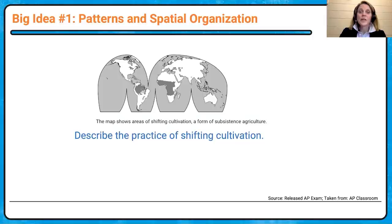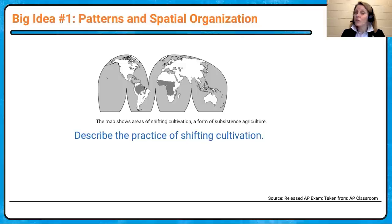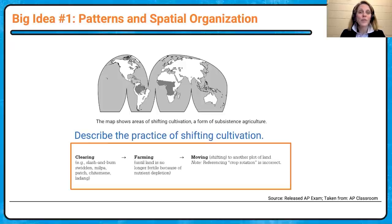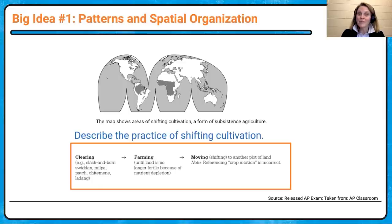Shifting cultivation is an example of subsistence agriculture. We have a map of where it's located — but what does shifting cultivation look like? What do we mean by shifting and cultivation? There are three big things we're looking for. First, we have to clear the land — a lot of times we talk about slash and burn. Then they're going to farm the land for a few years until it can no longer produce goods. When that happens, we move, we shift to another plot of land and start the process all over again. To receive points on an FRQ, you would need all three of those when describing shifting cultivation.